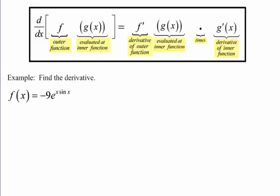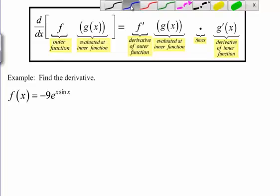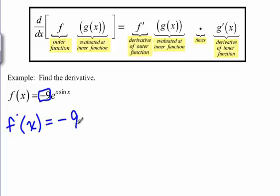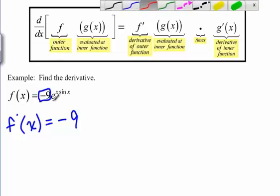Now we'd like to see how we use the chain rule in conjunction with some of the other rules we've learned already, like the product rule and the quotient rule. In the example we're looking at here we have negative 9 times e to the x sine of x. The negative 9 we can bring out front and ignore, because a constant times any function — the derivative will just have that constant in the front times whatever the derivative of the rest of it is.